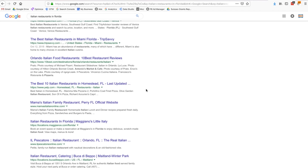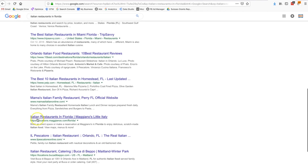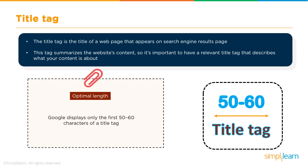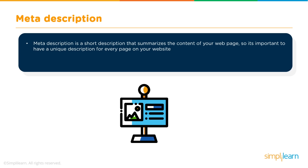If your title tag exceeds 65 characters, Google will cut it off with an ellipsis, which looks bad and reduces relevancy. If you follow the recommended format — keyword then brand name — like "Italian Restaurants in Florida | Simply Learn," you get an optimal title tag format within character limits. Keep the character count in mind; if you abide by that format of keyword and brand name, your title tag should be relevant for that keyword query.